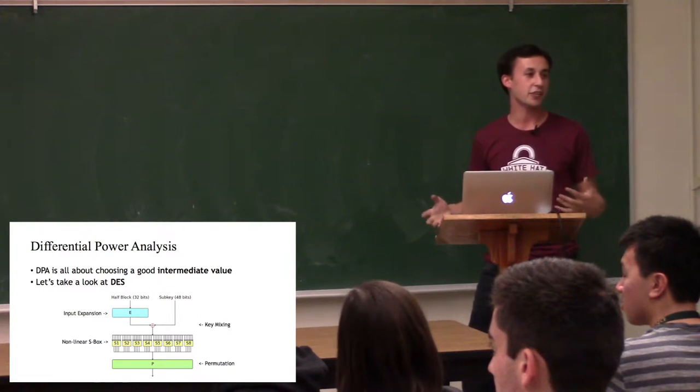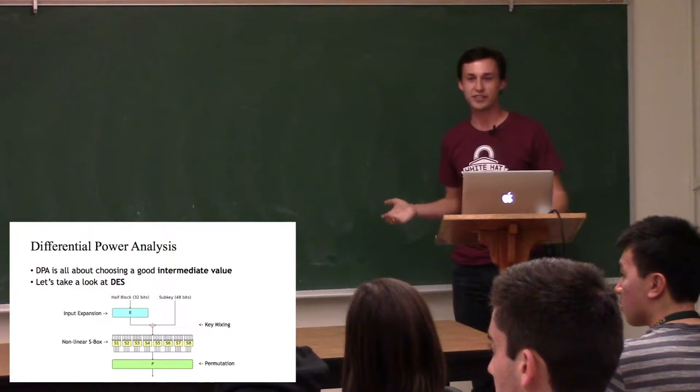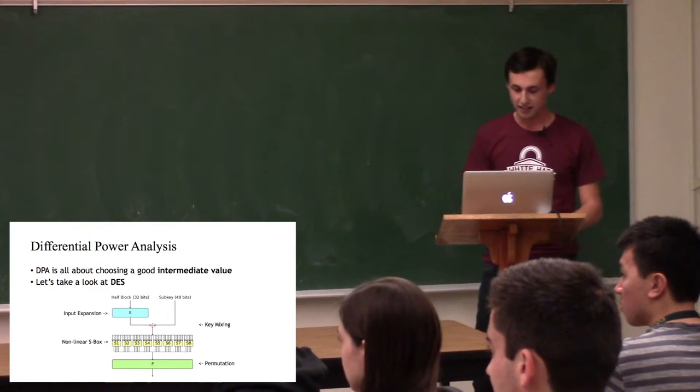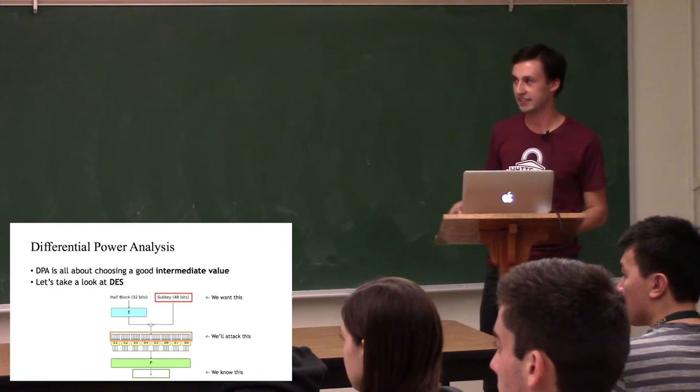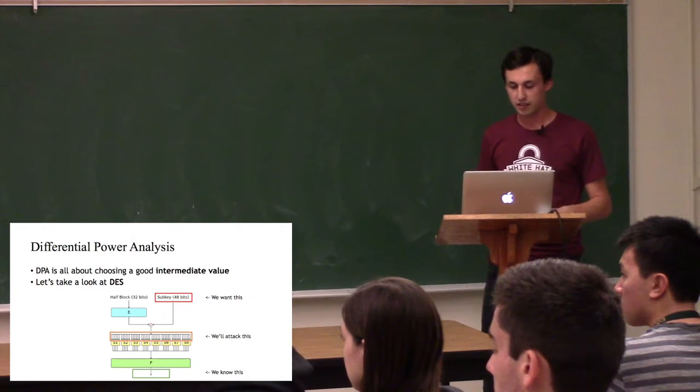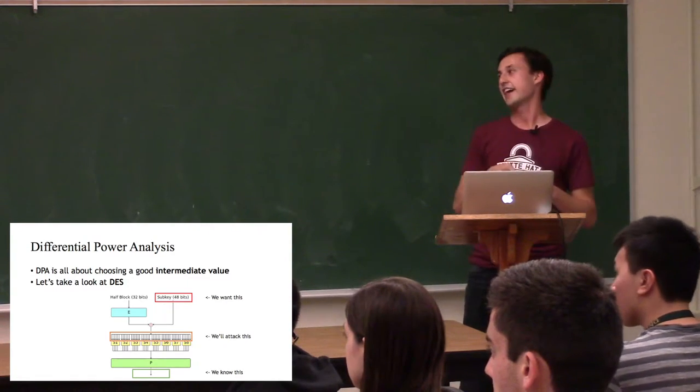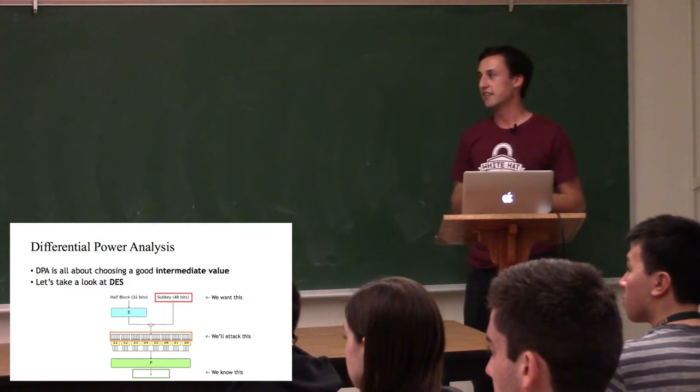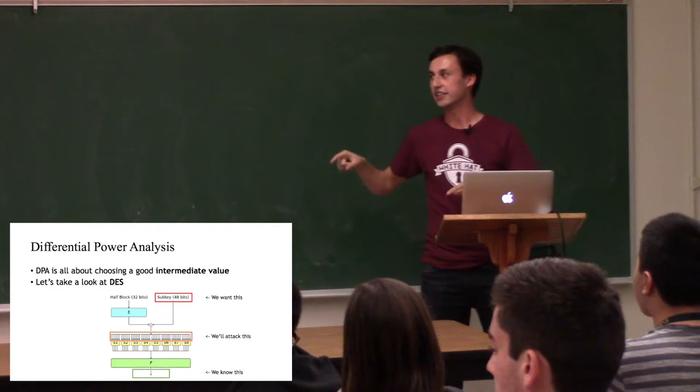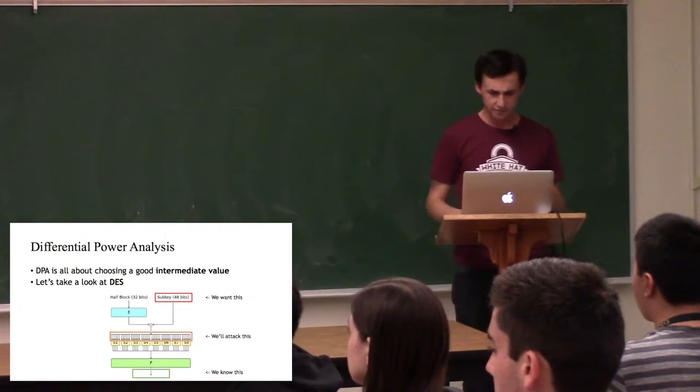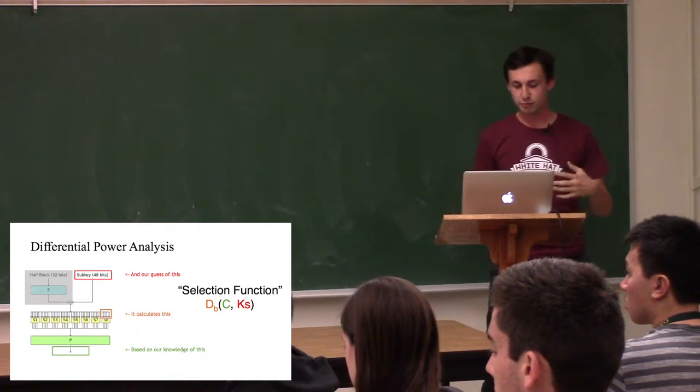You have the input coming in through the label that says half block, and the key coming in through the bit that says subkey, and then the ciphertext comes out the bottom. And so when you run DES, there are really four steps in this chunk. There's an input expansion, which turns the input into something that you can mix with the key. You then have the key mixing, and then you have two steps, a nonlinear S-Box and a permutation. So what, as an attacker, do we really care to look at in this? Well, we know the output, because obviously the point of encryption is you can distribute the ciphertext however you want. And we want the key, because if we have the key, we can decrypt any communication using that key.